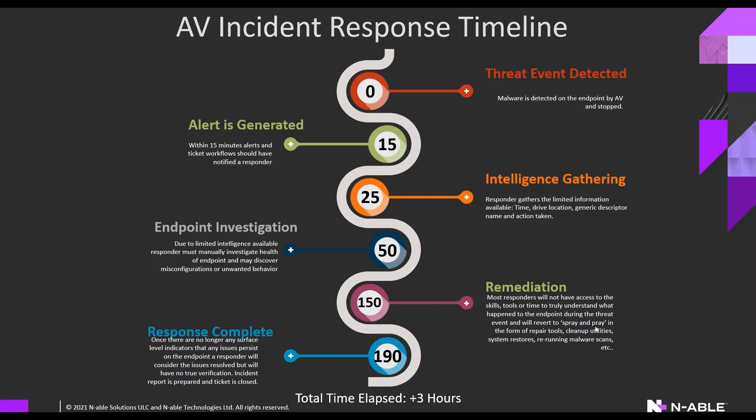Without good awareness of what really happened, remediation becomes spray-and-pray: run a repair tool, a cleanup utility, a system restore, another AV scan — potentially 30 minutes to three hours of technician time. A real-world example: AV catches something, N-central says it was taken care of, but then a help desk ticket comes in — the user's desktop background turned black and they can't change it back. The technician can guess the virus caused it, but doesn't know what really changed on the system.